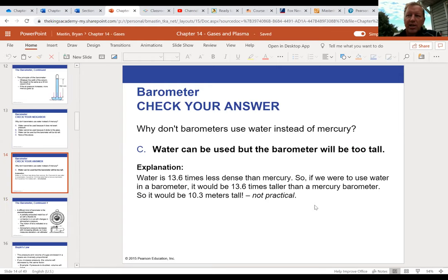But yes, the barometer would be too tall. And if you remember from yesterday, that column of water would be 10.3 meters tall, that big long straw, 10.3 meters tall, whereas mercury is 13.6 times denser than water. So, the column is 13.6 times smaller. It's much easier to use.